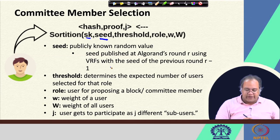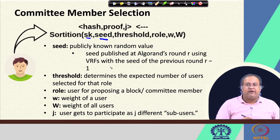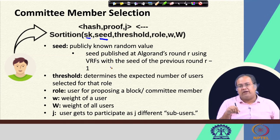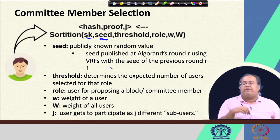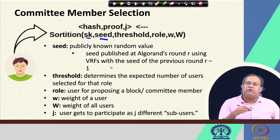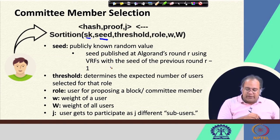The seed is published at Algorand's round r using VRF with the seed of the previous round r, so the seed value is also generated based on the verifiable random function — it uses a random number, but it is verifiable. There is also a threshold that determines the expected number of users selected for a given role. For example, if only one user is going to be selected, the threshold is 1; if I want a committee of 100 members, the threshold is set to 100.